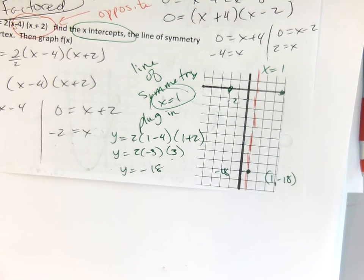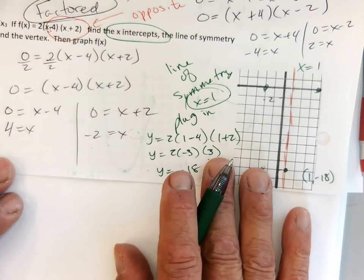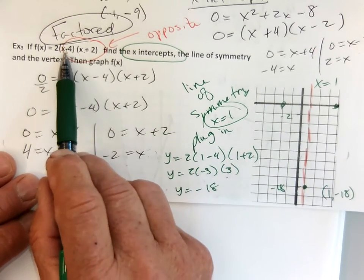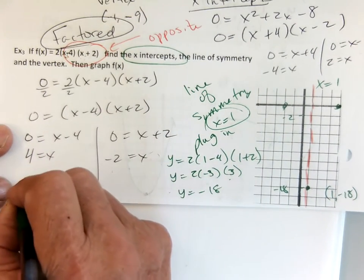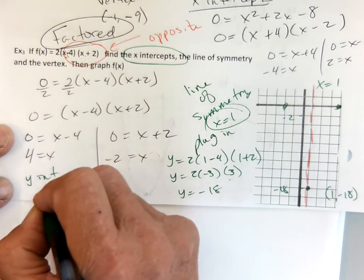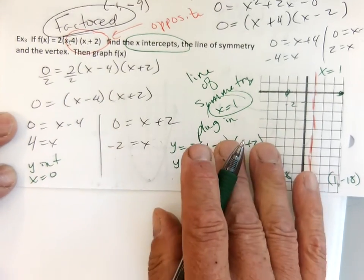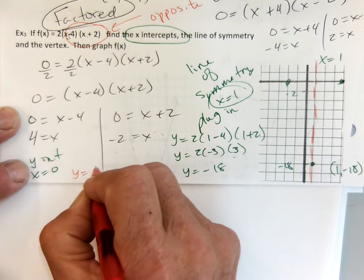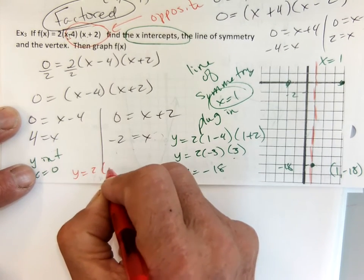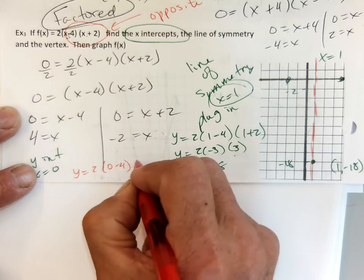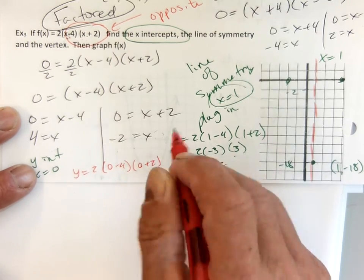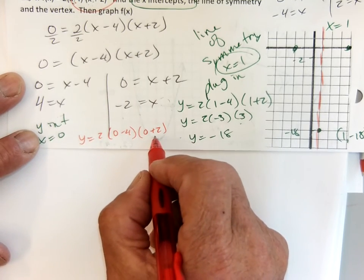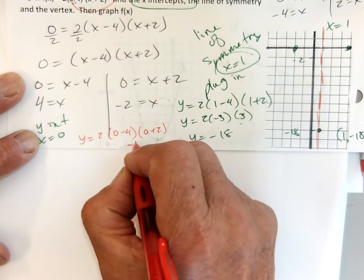Now the y-intercept — almost done. The y-intercept is when x is 0. So y equals 2 times (0 minus 4) times (0 plus 2), which turns out to be negative 16.